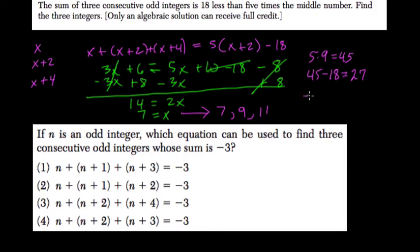And if we add 7 plus 9 plus 11, what do we get? We get 27, and that's equal. I'm just testing out this idea that 5 times the middle number minus 18 does equal the sum of all the numbers, so that does balance.